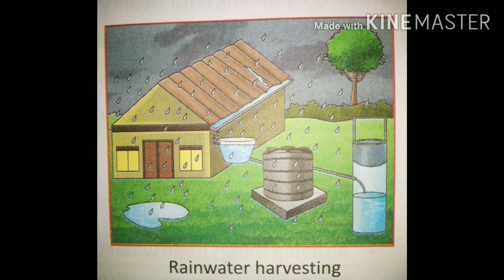This is the diagram of rainwater harvesting — you all have to draw and color it with pencil colors or crayons only. Draw this neat and clean diagram in front of question four where you have described rainwater harvesting. I hope you all have understood this, so complete this work and learn it also. Thank you and have a nice day.